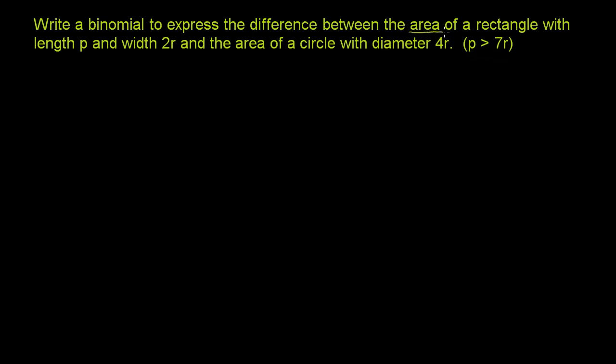So let's first think about the area of a rectangle with length p and width 2r. So this is our rectangle. It has a length of p and it has a width of 2r. So what's its area? Well, it's just going to be the length times the width. So the area here is going to be p, or maybe I should say 2rp. This is the length times the width, or the width times the length, so area is equal to 2rp for the rectangle.